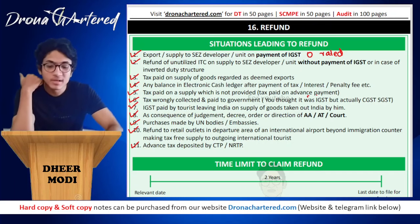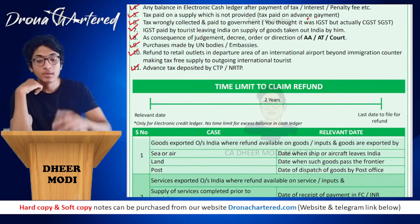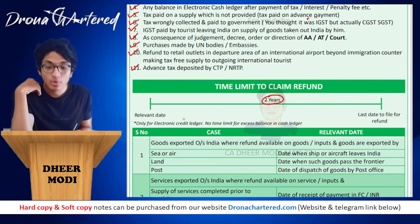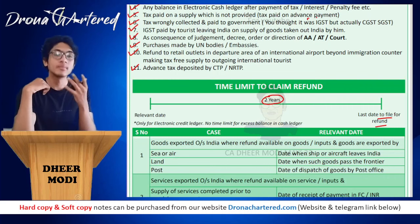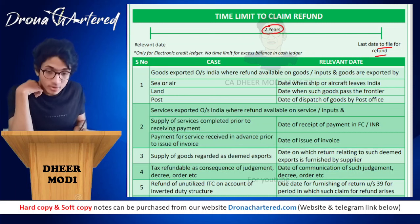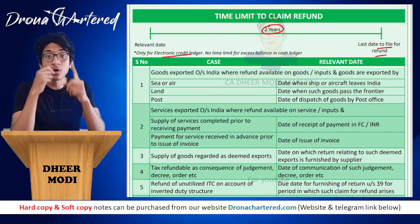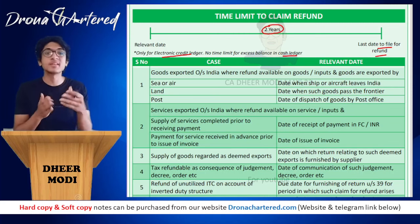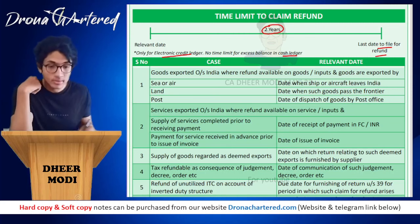Now, what is the time limit within which you can claim this refund? You can claim a refund within two years from the relevant date — so from the relevant date you can file an application within two years; that is the last day to file for refund. Note that this two-year time limit applies only to the electronic credit ledger, not to the electronic cash ledger, because cash ledger balance is your own money transferred from your bank — it is not ITC you are claiming.